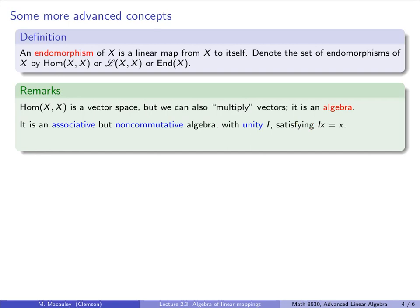This algebra is associative — meaning (ab)c = a(bc) — and non-commutative because ab is not always equal to ba. It has unity, which is a fancy way of saying a multiplicative identity I satisfying Ix = x for all vectors x. Not all algebraic structures have unity. One example is the even integers: you can add, subtract, and multiply them — making it a ring — but it does not contain 1, so it has no multiplicative identity.